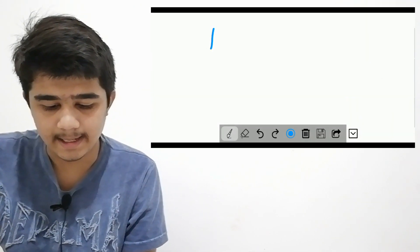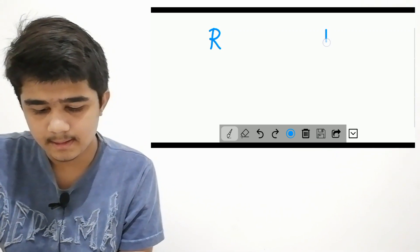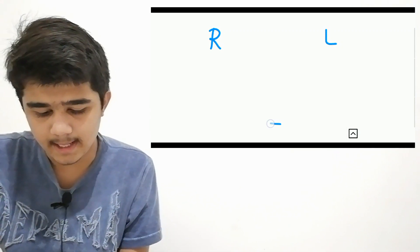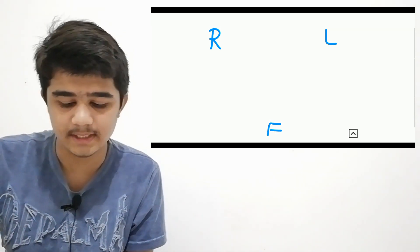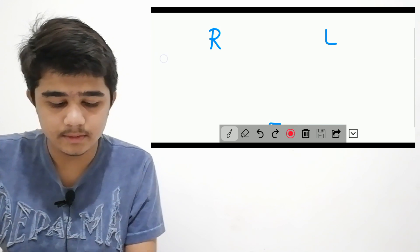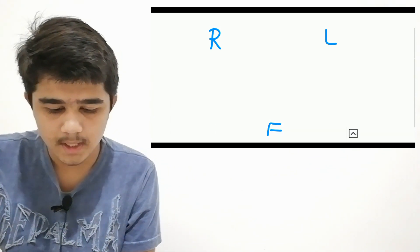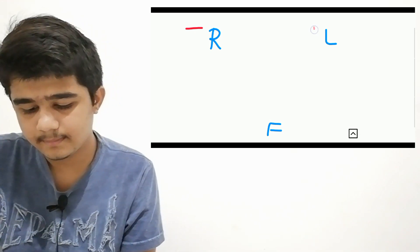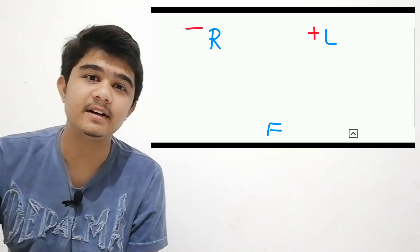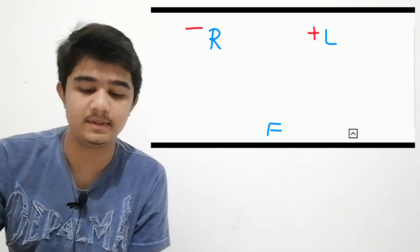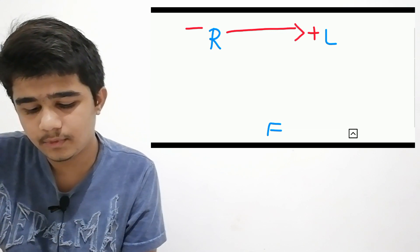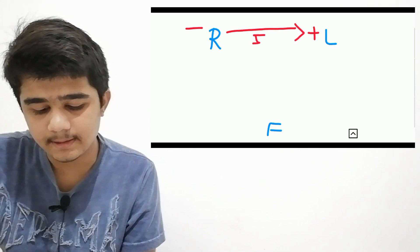Now let's discuss the limb leads. Limb leads are three in number: lead 1, lead 2, and lead 3. This is our right arm, this is our left arm, and this is our left foot. So right arm is negative, left arm is positive. Current flows from right arm to left arm, and this lead is called lead 1.